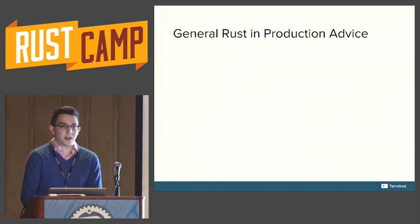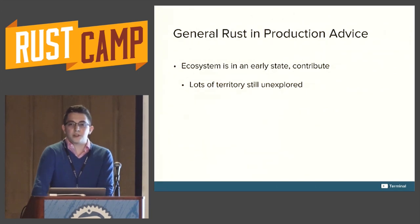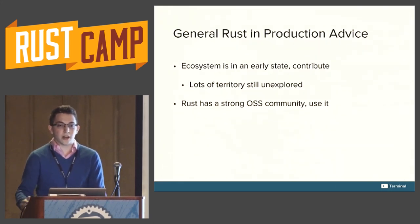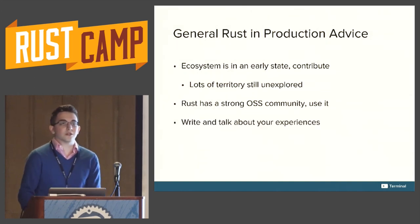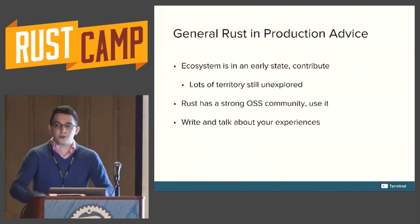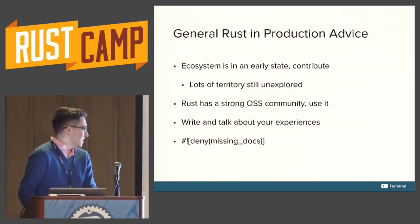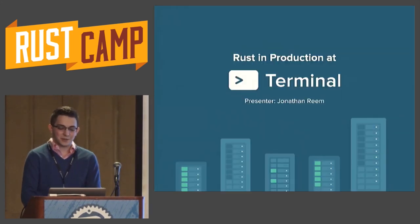A little bit of general Rust in production advice to tie up: the ecosystem is in a really early state — contribute. There's a lot of territory still unexplored, and if your company is the one building those libraries, you can get a lot of recognition and good will from the community. Rust has a really strong open source community — use it. As demonstrated by our Thrift implementation: we threw it out there and immediately started getting contributions that helped us enhance features and save work. You should write and talk about your experiences. If you're using Rust in production, you are an early adopter and your message is important. And finally, use doc comments liberally — you can force everyone to document their code and just not land a patch if it's not documented. This has been Rust in production at Terminal. Thank you very much.